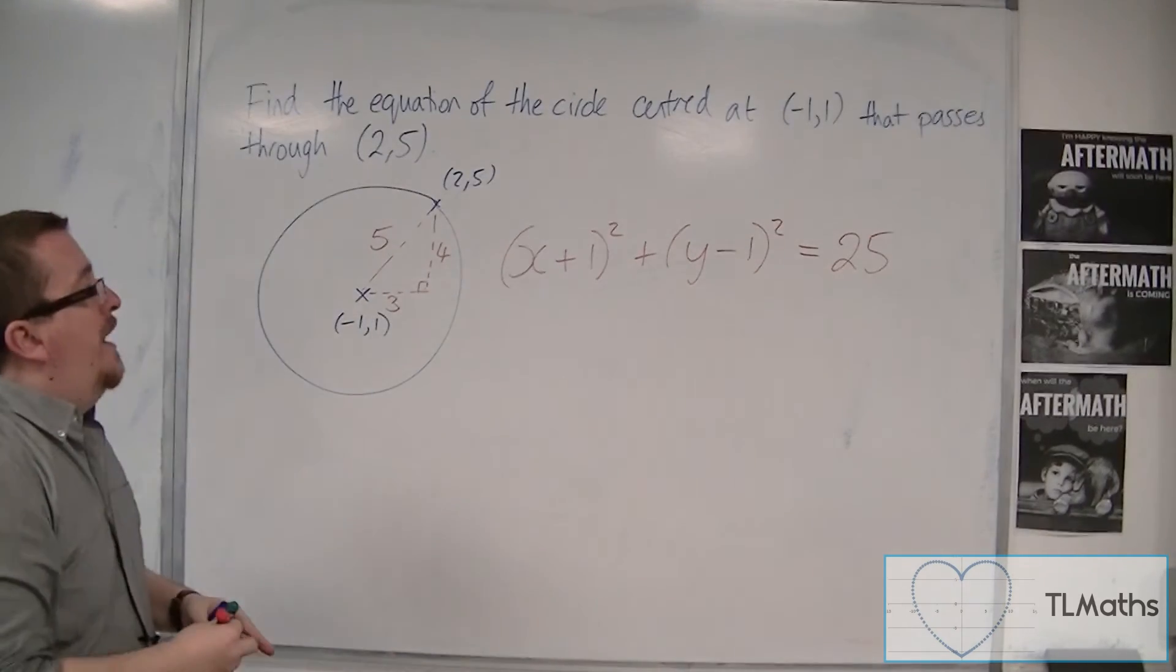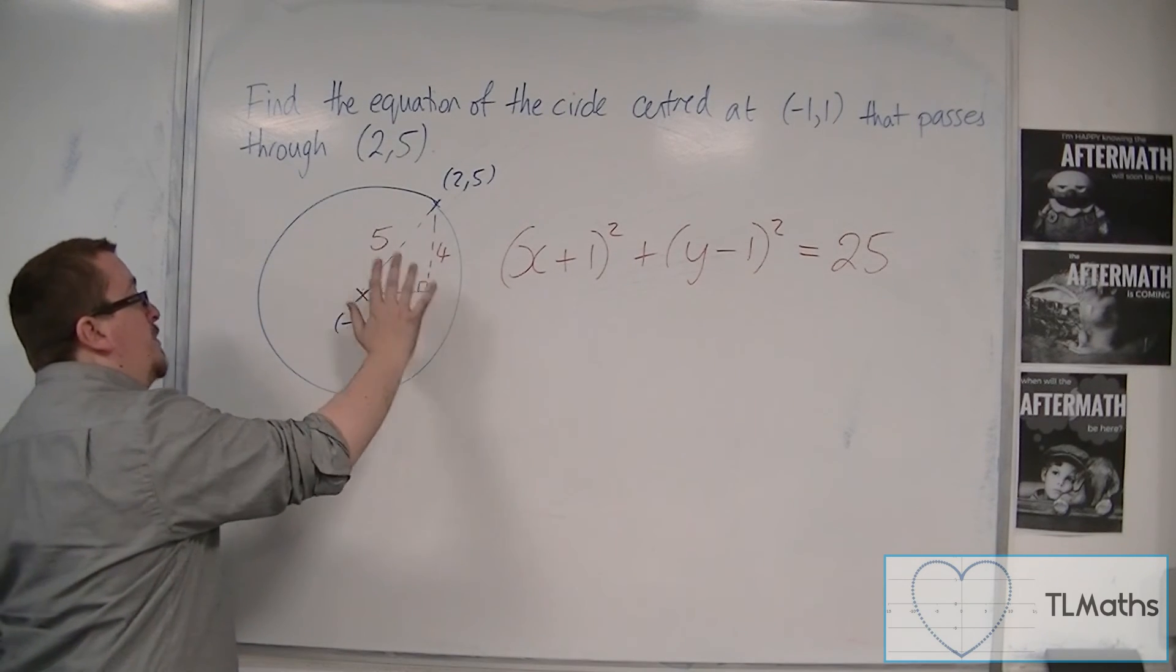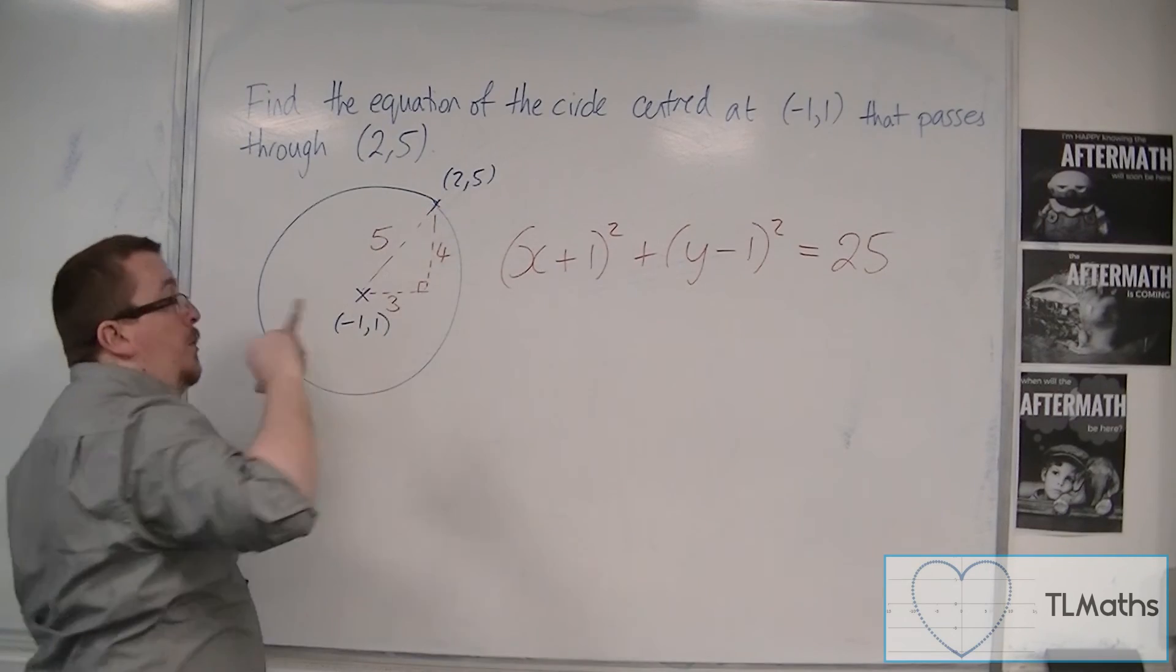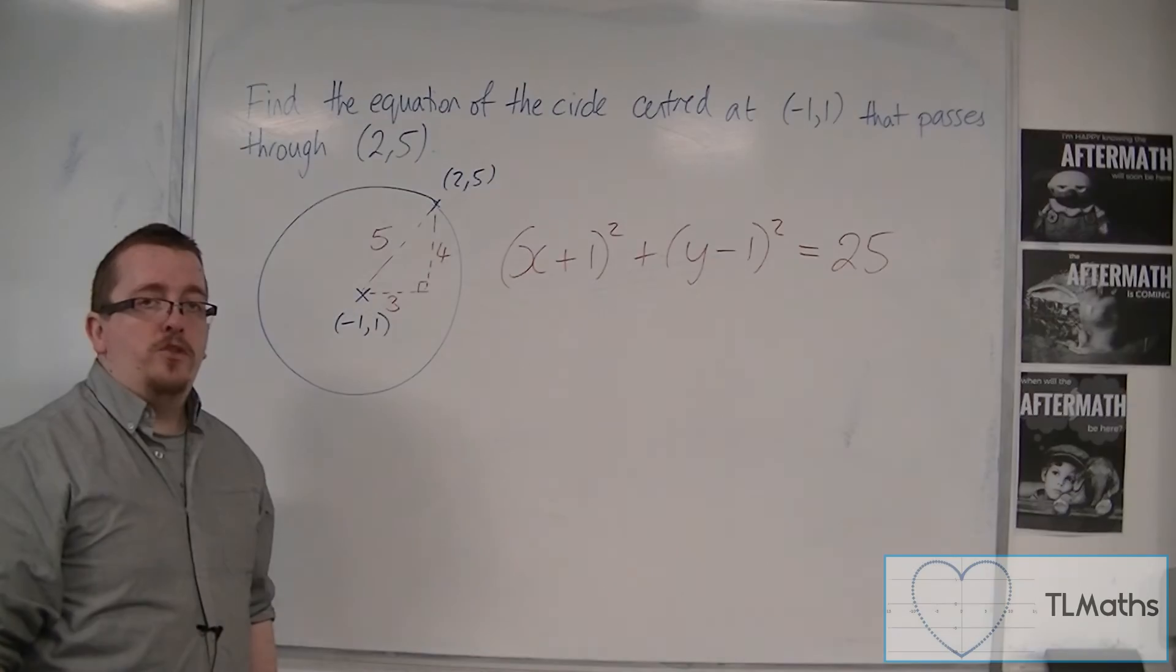And that's how we can do it. Use Pythagoras to find the distance between the center of the circle and the point on the circle. And then, once you've done that, you can write down the equation.